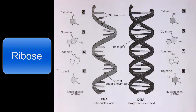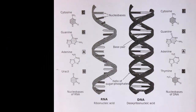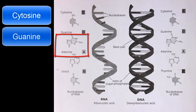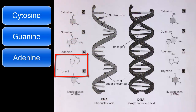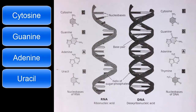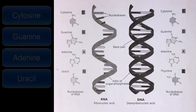The bases in RNA are cytosine, guanine, adenine, and uracil. There is no thymine in RNA — it is replaced with uracil.